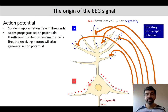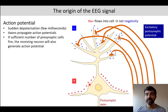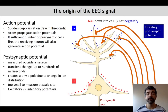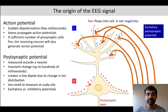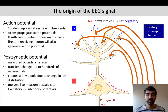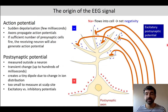Importantly, EEG is not directly related to the action potential. EEG doesn't measure the action potentials of neurons, but rather something we call the postsynaptic potential. That's related to the net negativity outside of a neuron. This is a more transient change — it can last up to hundreds of milliseconds — and it creates a tiny dipole due to the change in the ion distribution. This is too small to be measured at the scalp, but if enough neurons fire in synchrony, you can actually measure that outside of the scalp, where we usually put our EEG electrodes.